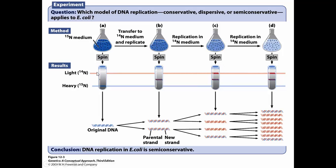Then they took all these bacteria — or at least a subsample — and transferred them to a new flask. From this point on, all the media is N14. They illustrate that by showing any DNA replicated from this point on is red in the picture; if it's red it's N14, if it's a blue strand it's N15. What they found was that each double helix had one old strand and one new strand — they're all hybrids, half and half. No double helix is totally N15 and none is totally N14, so they all sedimented to a middle value between those two extremes.